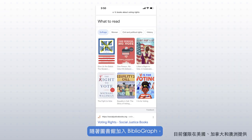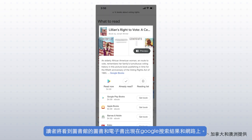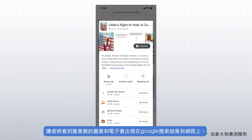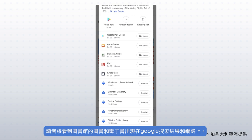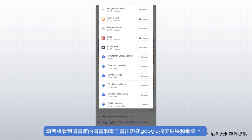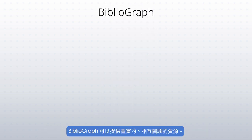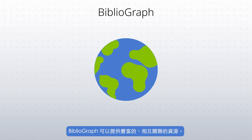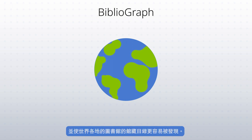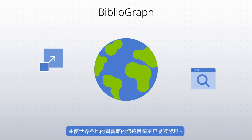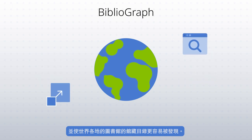As libraries join Bibliograph, users will see the library's books and ebooks appear in Google search results and around the web. Bibliograph can provide a wealth of enriched, connected resources and makes the catalog portable and visible to libraries around the world.